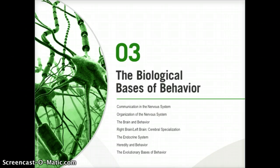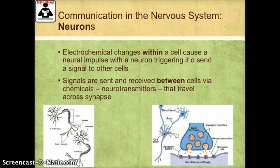Chapter 3: The Biological Bases of Behavior. This video is a continuation of communication in the nervous system. In Part 1, we discussed the different cells in the nervous system — the glial and the neurons.